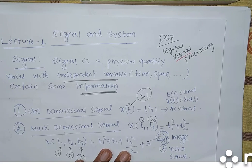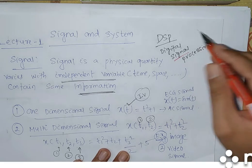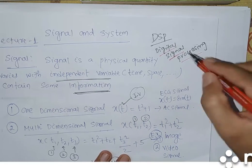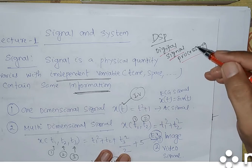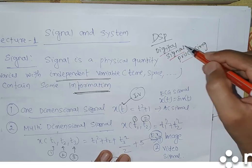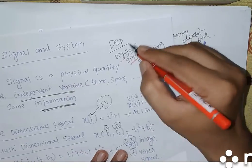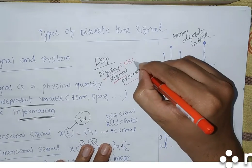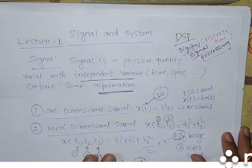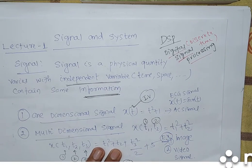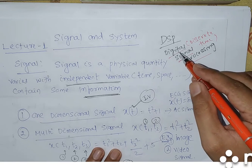You are processing the Signal. For processing, what is required? One System. There are three parts: Digital Signal Processing. Actually, according to the full form Digital Signal Processing, we are processing a Digital Signal. But actually, this is Discrete Time Signal Processing. We will process the Discrete Time Signal instead of Digital Signal.